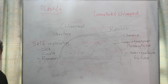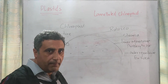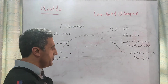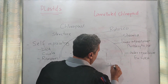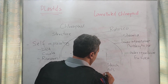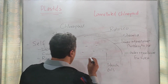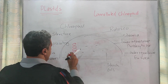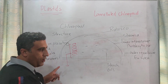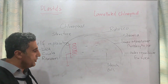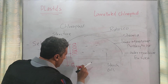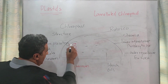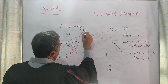Starch granules and oil droplets are also present in the stroma. So starch may be there, some oils may be there, and there are grana. That whole structure is known as a granum. One part is known as thylakoid.